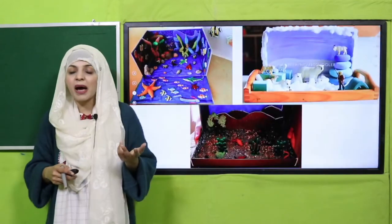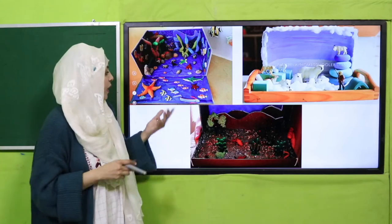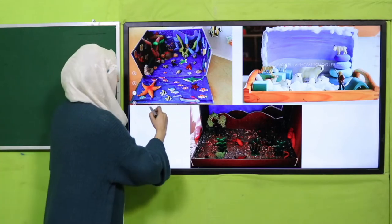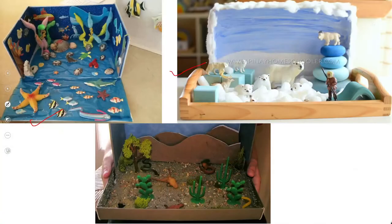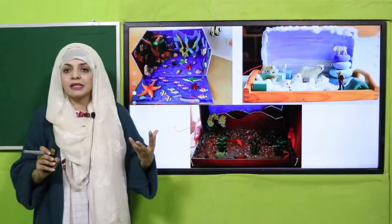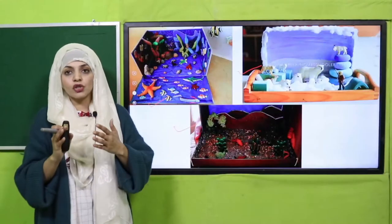We have different habitats we have studied - such as aquatic habitat, you can see here; then a model of a polar region; then a desert habitat. So you will choose any habitat, create a model, and show the environmental conditions and which plants and animals are present there.